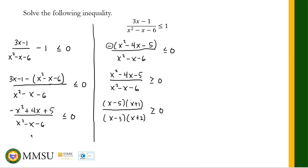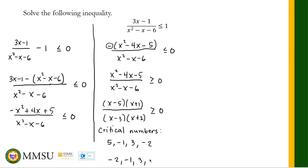Now we look for the critical numbers, which are the zeros of the numerator and the denominator: x = 5, x = -1, x = 3, and x = -2. In ascending order: -2, -1, 3, and 5. These four critical numbers divide our real number line into five intervals.